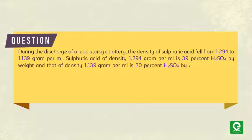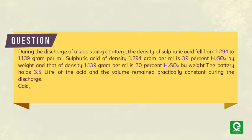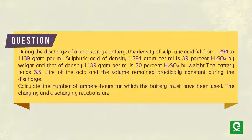The battery holds 3.5 liters of acid and the volume remained practically constant during the discharge. Calculate the number of ampere hours for which the battery must have been used. The charging and discharging reactions are given. This question was asked in IIT JEE 1986.